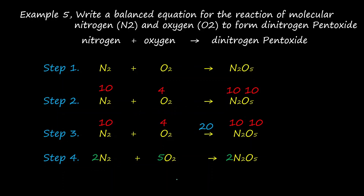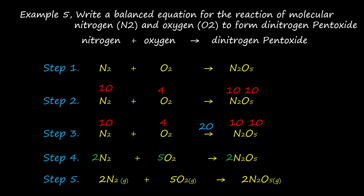The last step is to check whether the equation is balanced and to specify the state of matter. Nitrogen: 2 times 2 equals 4 on each side — balanced. Oxygen: 5 times 2 equals 10 on the reactant side, and also 5 times 2 equals 10 on the product side — balanced. The equation is balanced. The state of matter: nitrogen is gas, oxygen is also gas, and dinitrogen pentoxide is also gas.